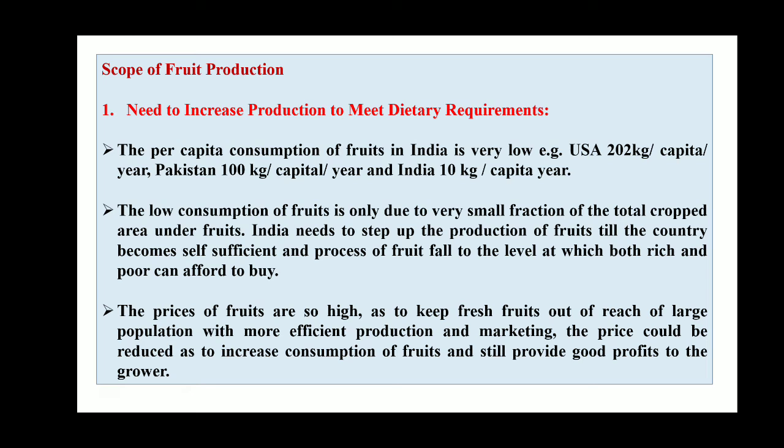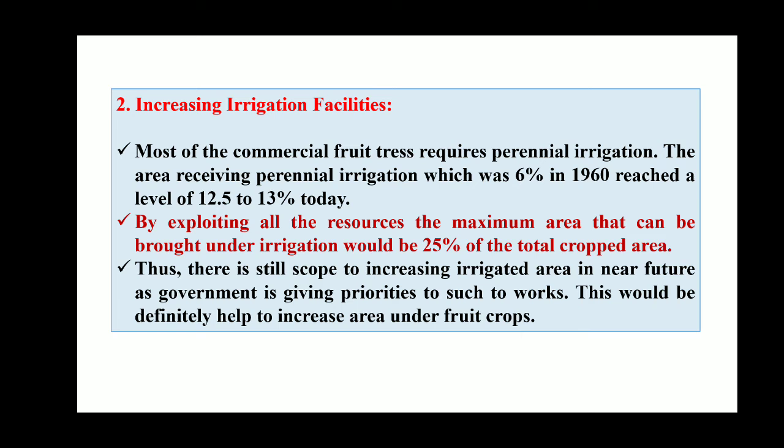The low consumption of fruit is due to the very small fraction of total crop area under fruits — only 0.7 percent of the total cultivable area. India needs to step up production until the country becomes self-sufficient and prices fall to a level at which both rich and poor can afford to buy. With more efficient production and marketing, prices could be reduced, increasing consumption while still providing good profit to growers.